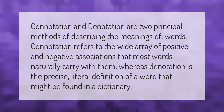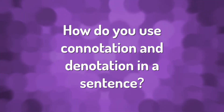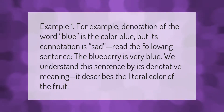Connotation and denotation are two principal methods of describing the meanings of words. Connotation refers to the wide array of positive and negative associations that most words naturally carry with them, whereas denotation is the precise literal definition of a word that might be found in a dictionary. For example, the denotation of the word 'blue' is the color blue, but its connotation is sad. Read the following sentence: 'The blueberry is very blue.' We understand this sentence by its denotative meaning — it describes the literal color of the fruit.